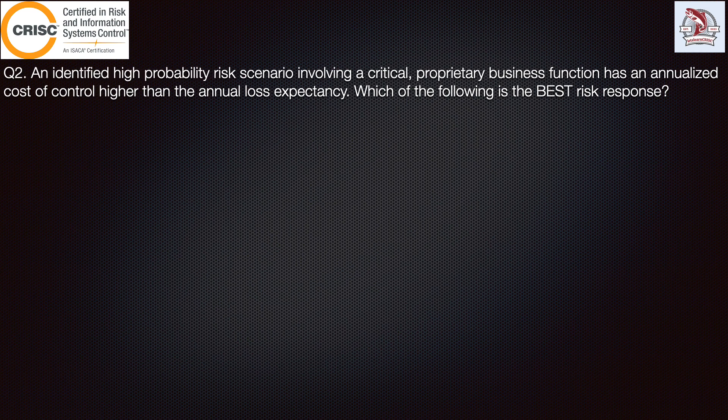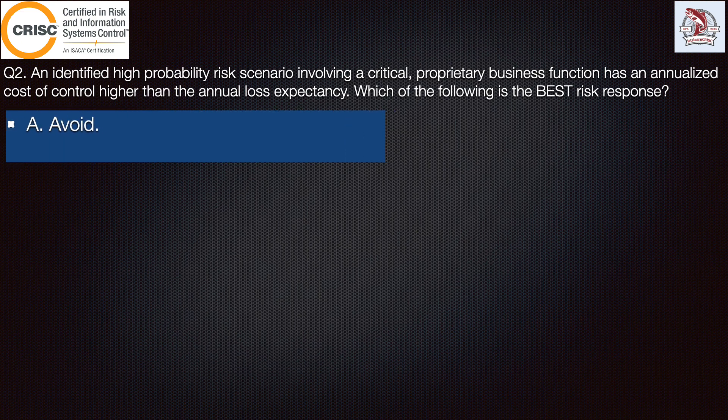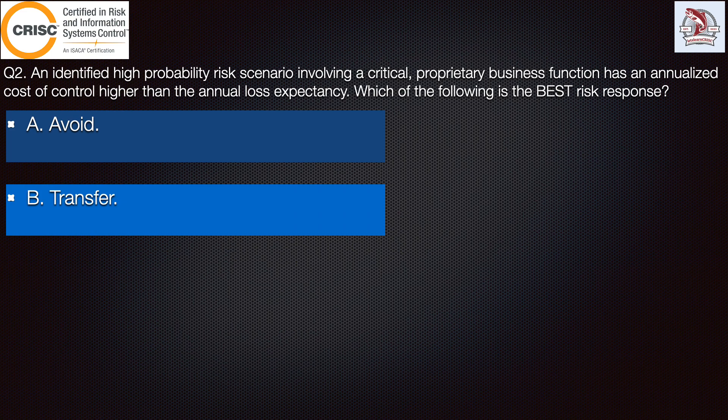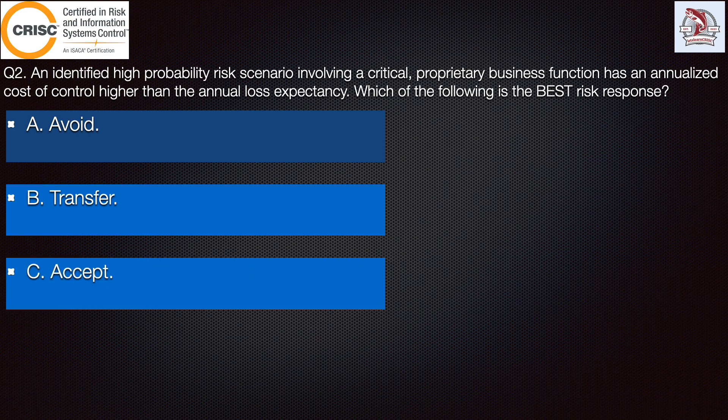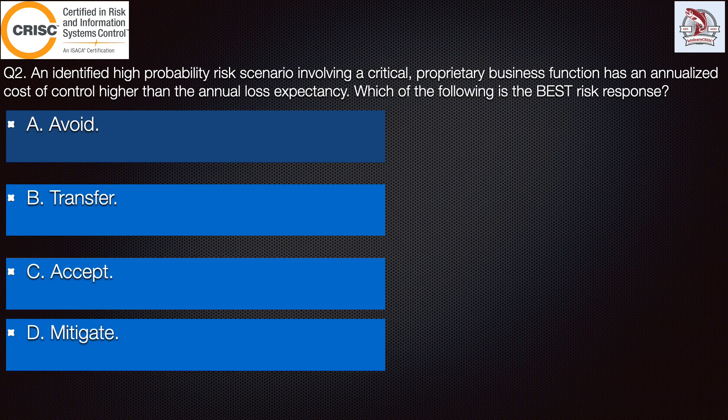Coming to the next question: An identified high probability risk scenario involving a critical or proprietary business function has an annualized cost of control higher than an annual loss expectancy. Which of the following is the best risk response? The options are: to avoid, to transfer, to accept, or to mitigate.